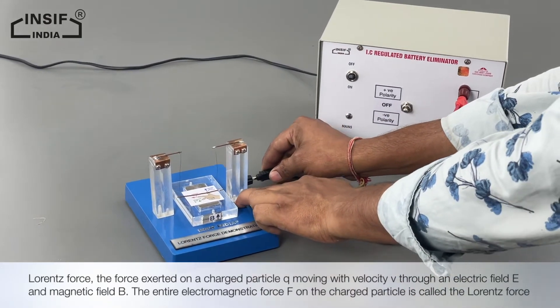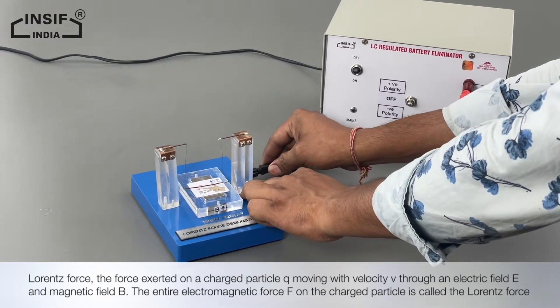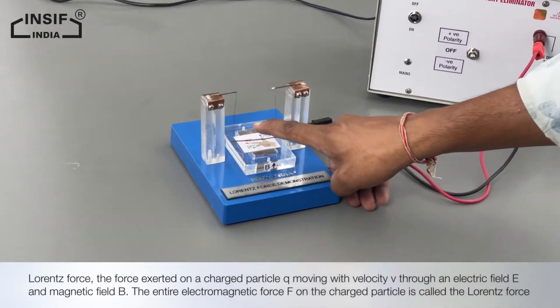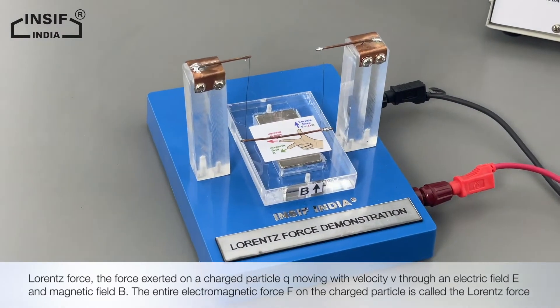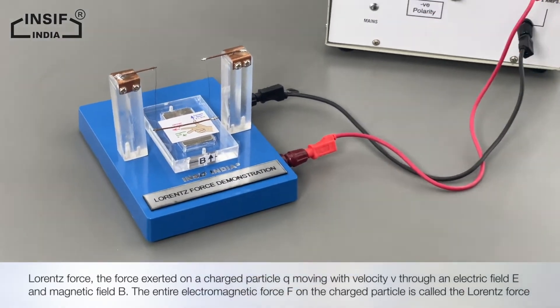As we can see, the conductor is placed in the magnetic field. Now according to the law, when current passes through the conductor in a magnetic field, a force is exerted on the current carrying conductor.